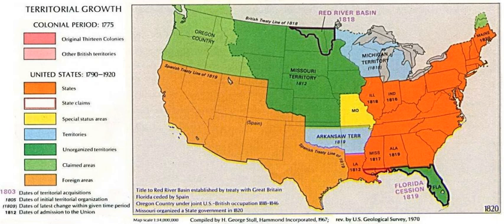As part of the Compromise, slavery was prohibited north of the 36 degrees 30 parallel, excluding Missouri. The 16th United States Congress passed the legislation on March 3, 1820, and President James Monroe signed it on March 6, 1820.